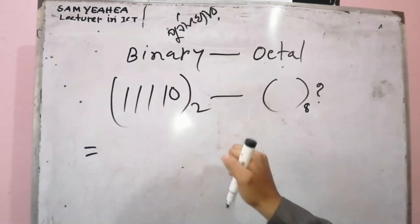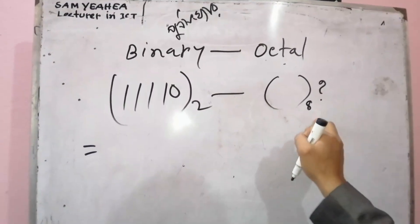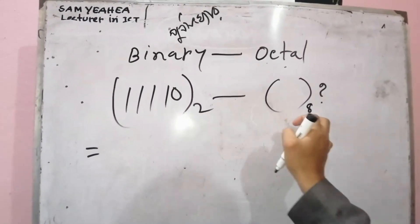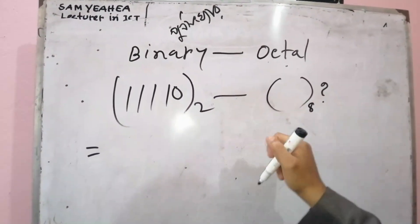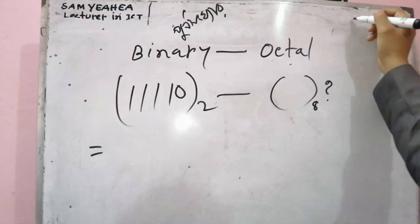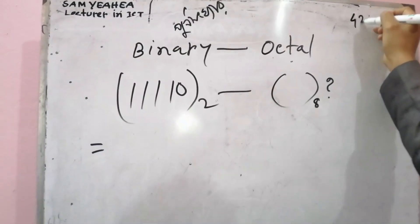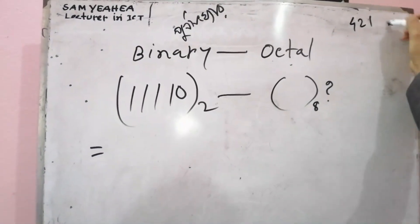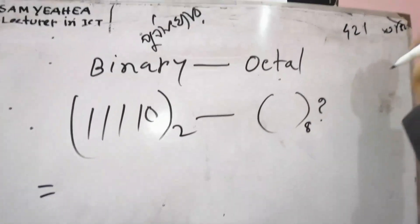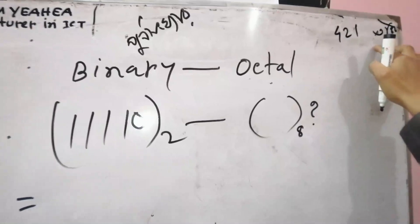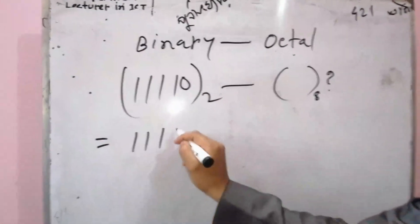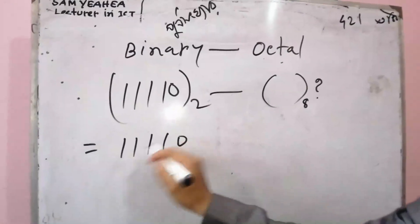So, what do we do? There are many vectors in binary. In the same way, we use 4, 2, 1 and three bits. We use 4, 2, 1. In the same way, we use 1, 1, 1, 0.